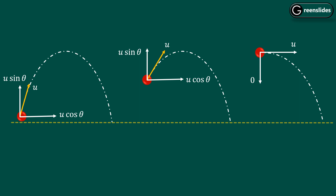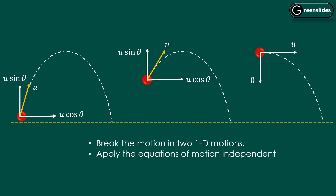There can be many cases of projectile motion, especially the third case. If you give a body an initial velocity at zero degrees with the horizontal, there is a horizontal component of velocity but no vertical component. Remember that. The two key steps are: first, break the motion into two one-dimensional motions; and second, apply the equations of motion independently for each axis.